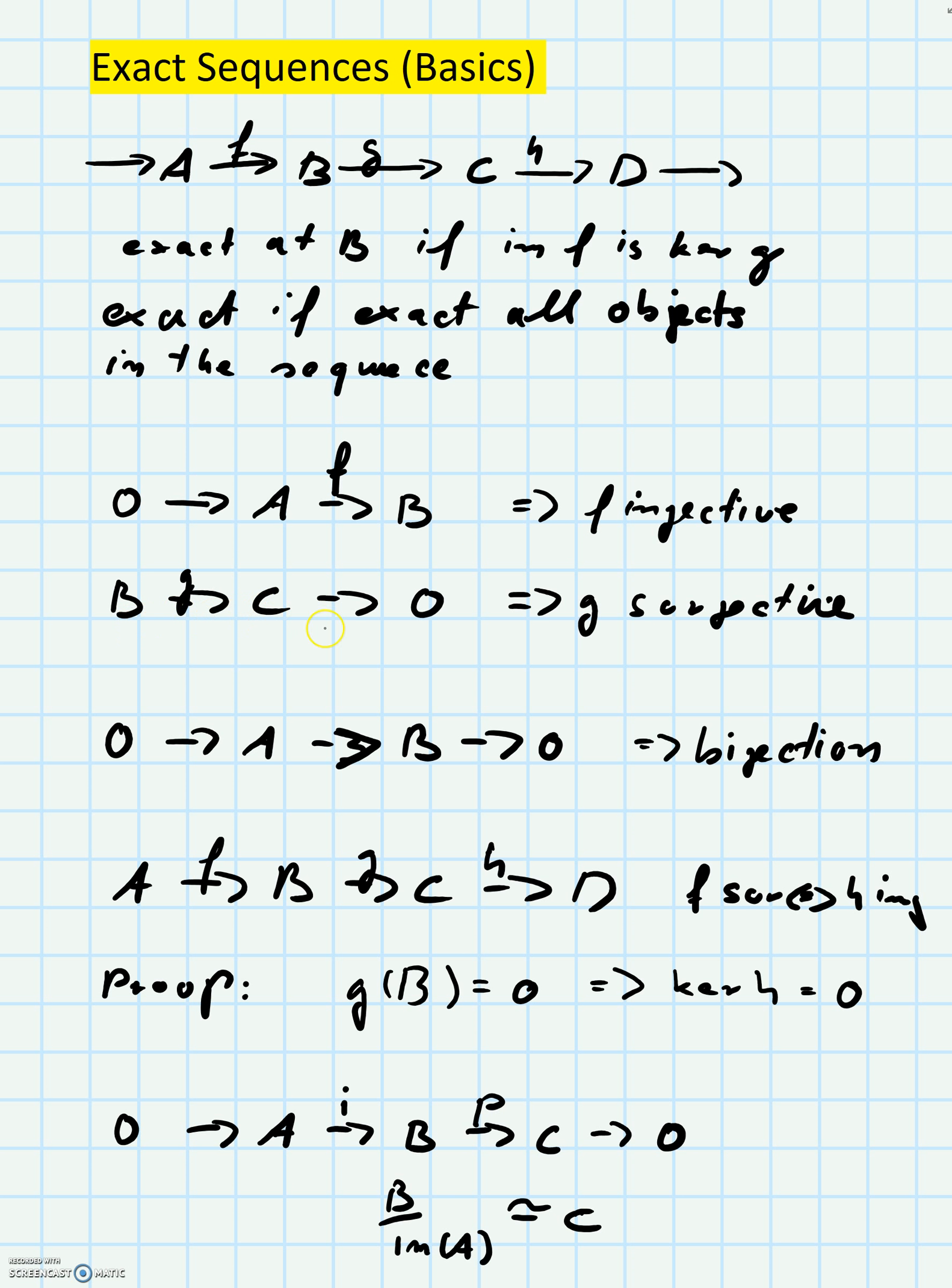The next thing is if you have a sequence B→C→0 and this is exact, then you can conclude that G has to be surjective, because the image of G is the kernel of this nameless homomorphism from C to 0. So all of C is mapped to 0, so all of C has to be in the image of G, so G is indeed surjective.